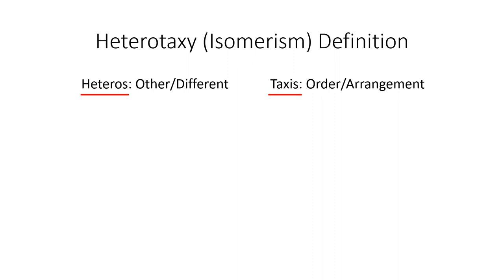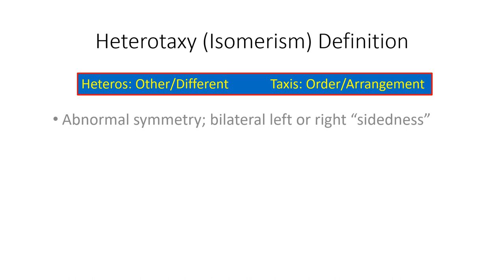The word heterotaxy is derived from the Greek words heteros meaning other or different, and taxis meaning order or arrangement. In anatomical terms, the definition is when there is abnormal symmetry consisting of bilateral same-sidedness, where the viscera and atrial anatomy is consistent with mirroring of either left or right-sided anatomical structures.